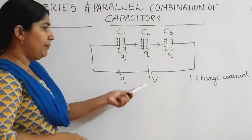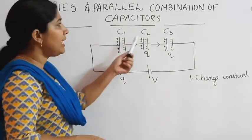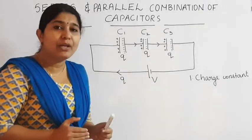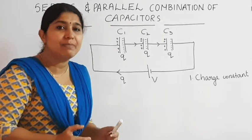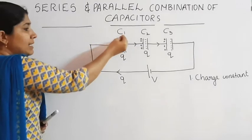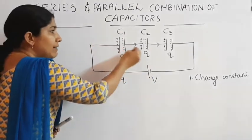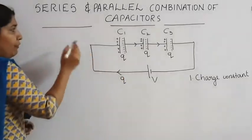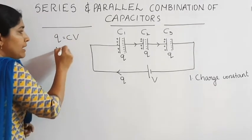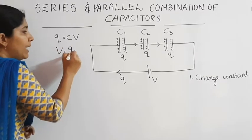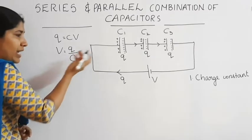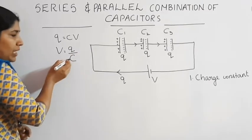What about the potential? Because of the difference in capacitance of these three capacitors, the potential drop across each capacitor may vary. Depending upon the value of capacitance, the value of potential in these capacitors varies. We know that Q is equal to C into V, therefore V is equal to Q divided by C. Here the value of capacitance varies, so the potential also varies.